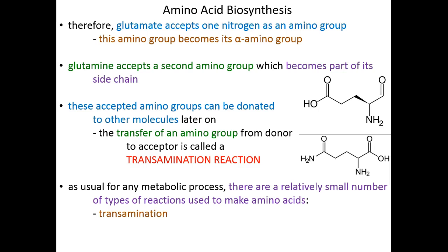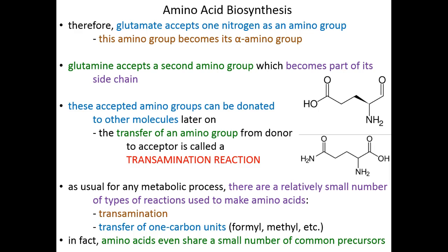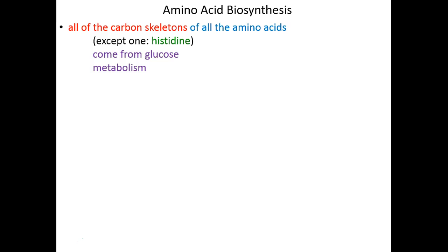As usual for any metabolic process, there are a relatively small number of reaction types used to make amino acids: transamination, which we just talked about, and transfer of one-carbon units — in other words, transfer of methyl units, formyl units, side chains or groups that contain single carbons. Amino acids even share a small number of common precursors, as we saw in our final citric acid cycle lecture chunk. There's not much that goes into making amino acids because we're only using a handful of reaction types and only a handful of precursors.